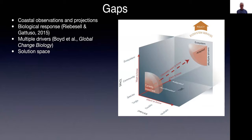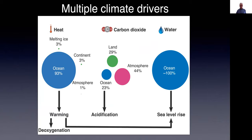There are still many remaining research gaps on coastal observations and projections and on biological response, as illustrated on the right-hand side. To properly inform policymakers, one needs information at the ecosystem scale, with multiple drivers and long-term experiments, whereas most current experiments are on single drivers, single species, and on very short time scales. Phil Boyd, as part of a SCOR working group that he is leading, has provided very nice tools for multiple-driver ocean acidification research. There are also gaps in the solution space, because ocean acidification cannot be investigated on its own — there are several climate drivers such as warming, deoxygenation, and sea level rise to be taken into consideration.